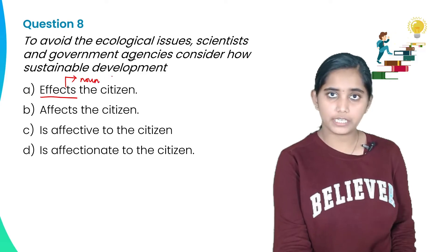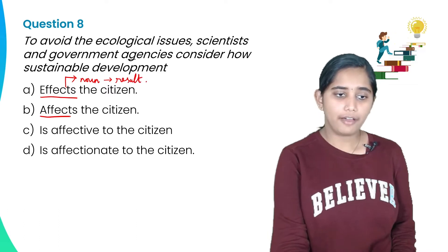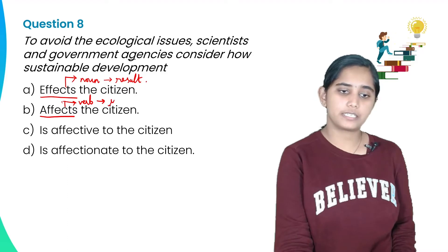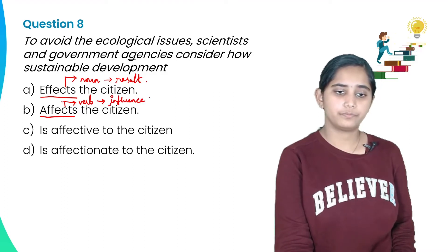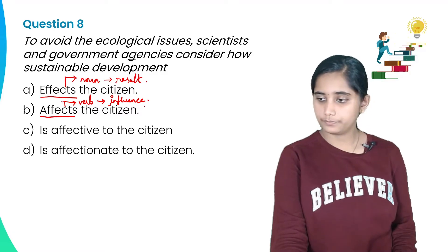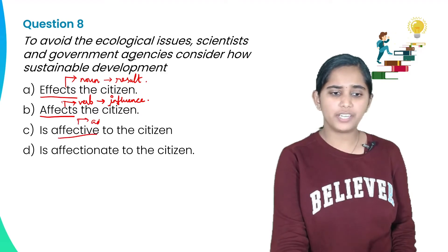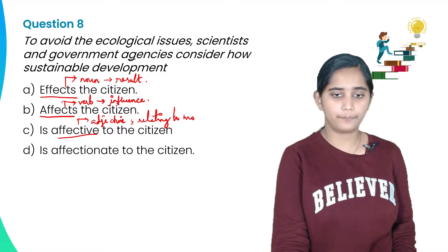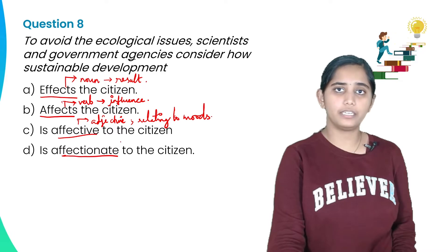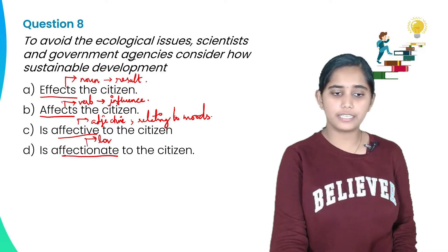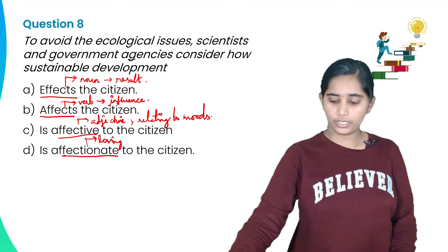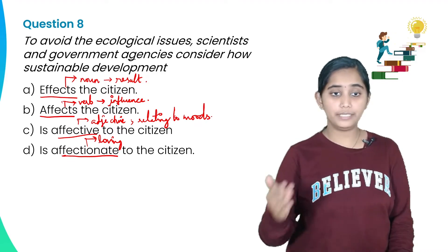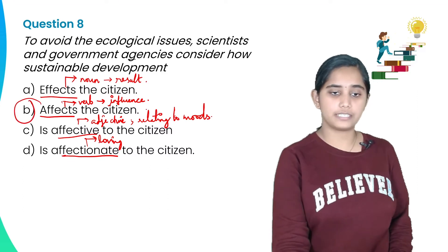'Affect' as a verb means to influence. 'Affective' is an adjective relating to moods or emotions. 'Affectionate' means loving. So, to avoid the ecological issues, scientists and government agencies consider how sustainable development influences or affects the citizen. Option A — 'affects the citizen' — is the answer.